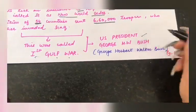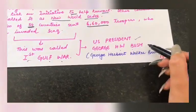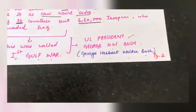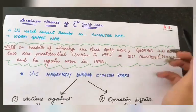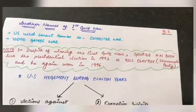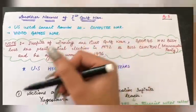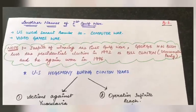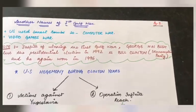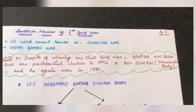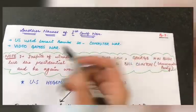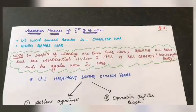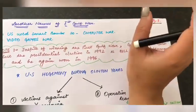The coalition of 34 countries sent 660,000 troops to invade Iraq, and this was known as the First Gulf War. The US president at that time was George H.W. Bush — George Herbert Walker Bush. The First Gulf War has some important names for one-mark questions: it was called the Computer War and also the Smart Bombs War. It was also called the Video Games War because other countries watched how the US shot missiles and bombs at Iraq on television, making it look like a video game.